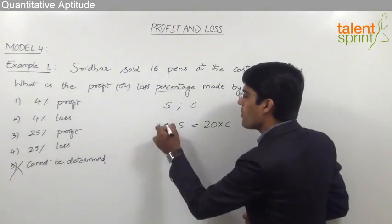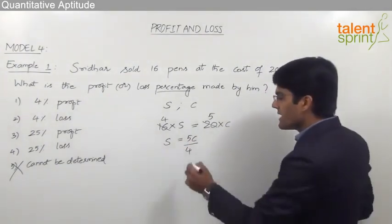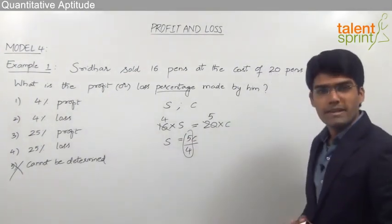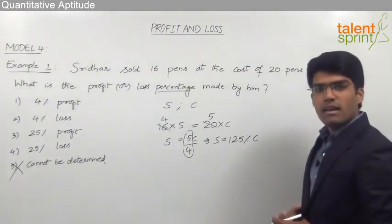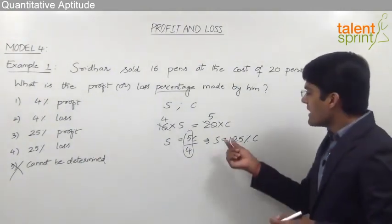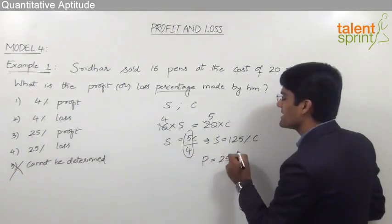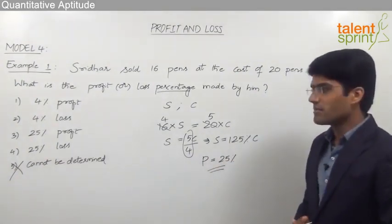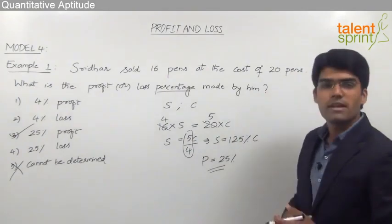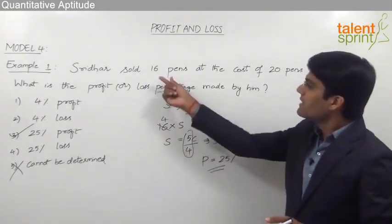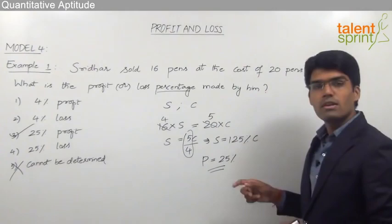From this we can say that 16S = 20C, which simplifies to 4S = 5C, or S = 5C/4. Now 5/4 is nothing but 125%, so the selling price is equal to 125% of the cost price. As per our discussion in Model 1, if the selling price is 125% of the cost price, the profit is equal to 25%. So the profit made by Sridhar is 25%, and the correct answer is option 3. Never mark the answer as 'cannot be determined' just because the selling price or cost price have not been given.